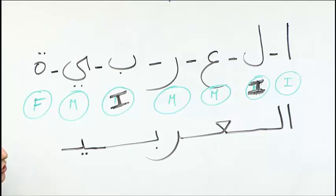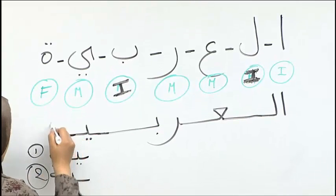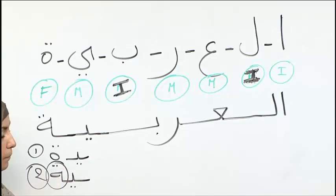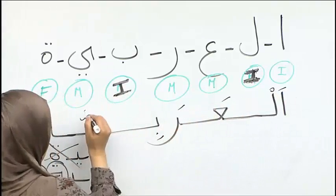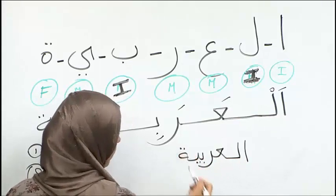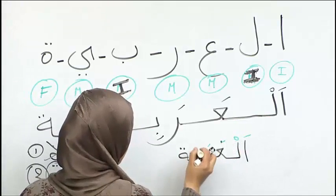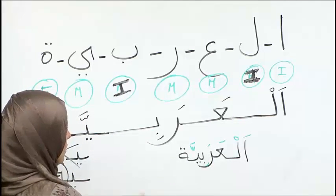And then ta, it's final. Can it connect to ya? I'm gonna write two shapes and you tell me which one is right. This is the one that we have right now. Which one do you think is right, one or two? Two. Perfect. Because when it's connected it takes this shape. This is wrong. So the word is al-arabiya. This is the normal spacing for the word.